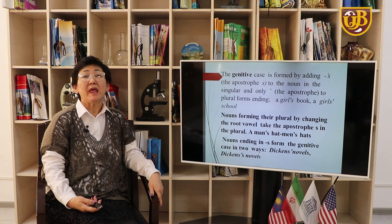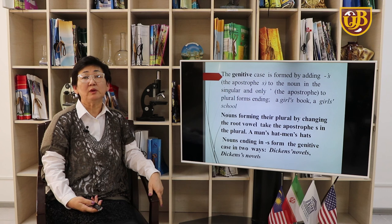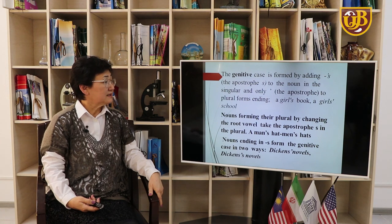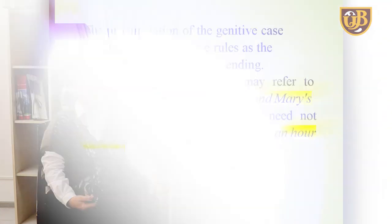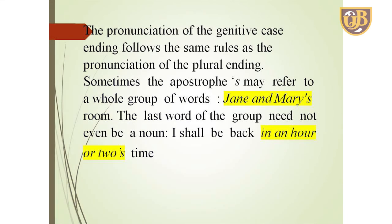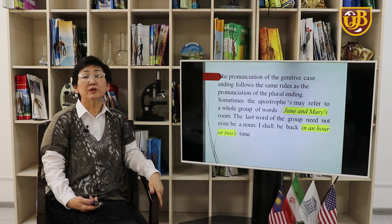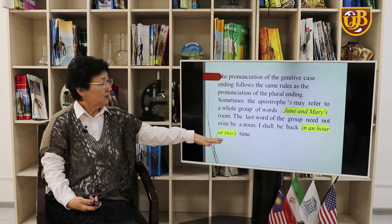The genitive case is formed by adding apostrophe -s to the noun in the singular, and only the apostrophe to the plural form ending in -s: a girl's look, a girls' school. Nouns forming the plural by changing the root vowel take apostrophe -s in the plural: a man's hat, men's hats. Nouns ending in -s may form the genitive in two ways: Dickens' novel or Dickens's novel. The pronunciation of the genitive ending follows the same rules as the plural ending. Sometimes the apostrophe may refer to a whole group: 'Jane and Mary's room.' 'I shall be back in an hour or two's time.'